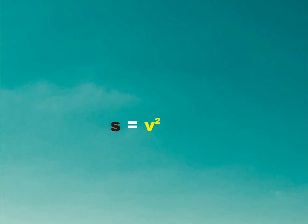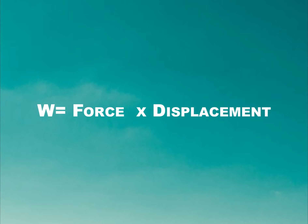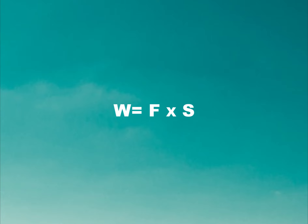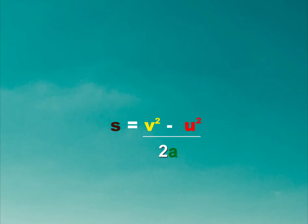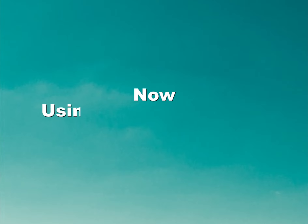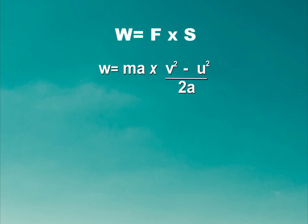This can be written as S equal to V squared minus U squared divided by 2A. Coming back to the equation of work done, we have work done equal to force into displacement, which is F into S. We know that force equals mass into acceleration, and S equals V squared minus U squared divided by 2A. Using this equation we get: work done is equal to MA into V squared minus U squared divided by 2A, which simplifies to half M times V squared minus U squared.